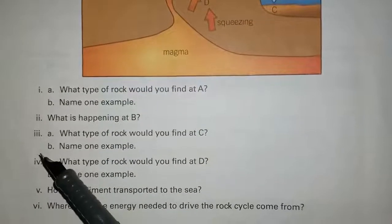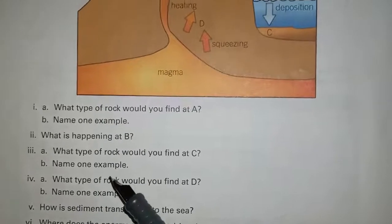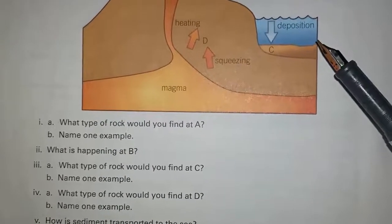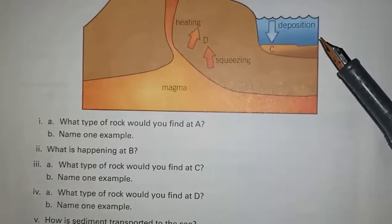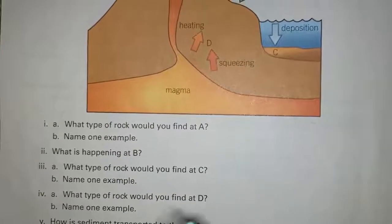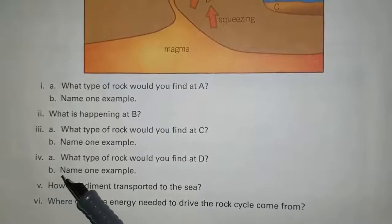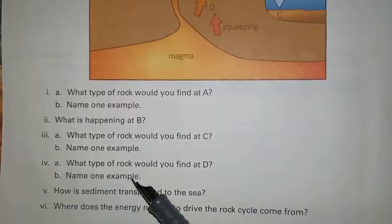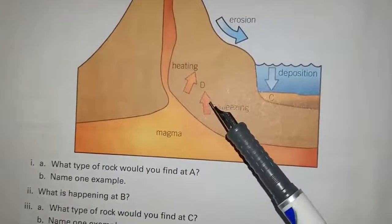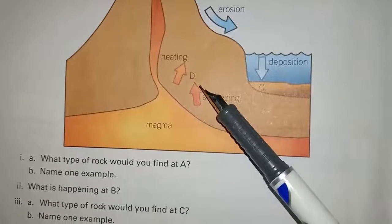Question number 7, part 3B: name one example. There are many types of sedimentary rocks: limestone, sandstone. Question number 7, part 4A: what type of rock would you find at D? Here we would find metamorphic rocks.